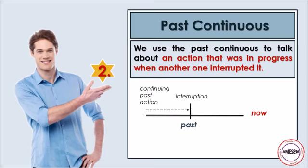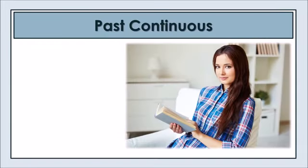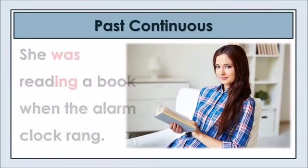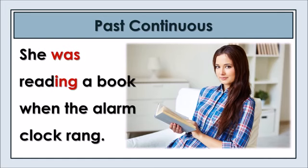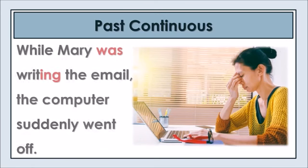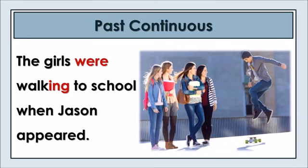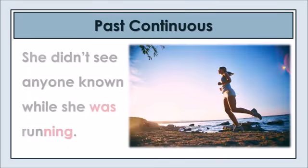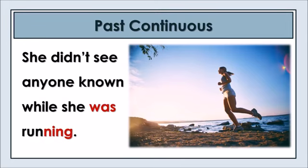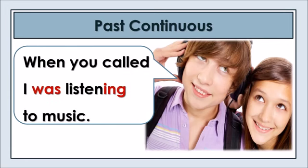We use the past continuous to talk about an action that was in progress when another one interrupted it. Note that for the event that interrupts the action, we use the past simple tense. She was reading a book when the alarm clock rang. While Mary was writing the email, the computer suddenly went off. The girls were walking to school when Jason appeared. She didn't see anyone known while she was running. When you called, I was listening to music.